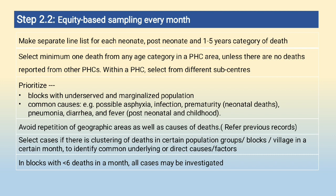Separate line lists for neonate, post-neonate, and 1 to 5 years death categories. Minimum one death per age category per PHC area unless there are no deaths reported from other PHCs. Within a PHC, select from different sub-centers. Prioritize blocks with underserved and marginalized populations. Common causes include possible asphyxia, infection, prematurity, pneumonia, diarrhea, fever. Post-neonatal deaths are prioritized. Repetition of geographic area should be avoided.